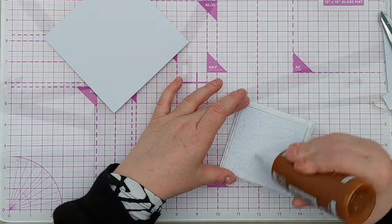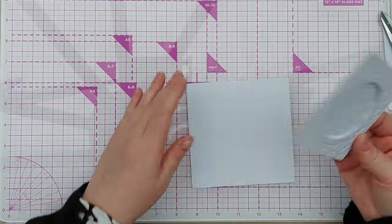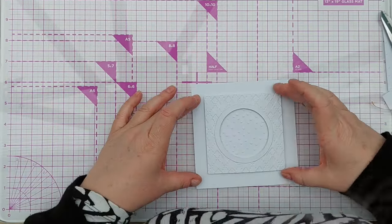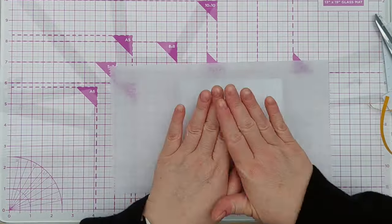After I'd added the dotty panel to the back of the aperture panel, I adhered the whole thing down to the center of a square card base.